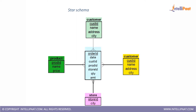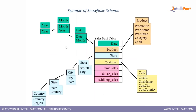Star schema is not a normalized one, whereas snowflake schema is a normalized one. If you consider the same data, in snowflake schema we normalize each dimension, and then we have a hierarchy of dimensions. This is the only difference between star and snowflake. Star is not normalized, whereas snowflake is normalized. When we say normalized, what we are doing is dividing one table into multiple tables — that is, we are forming a hierarchy of your dimensions.